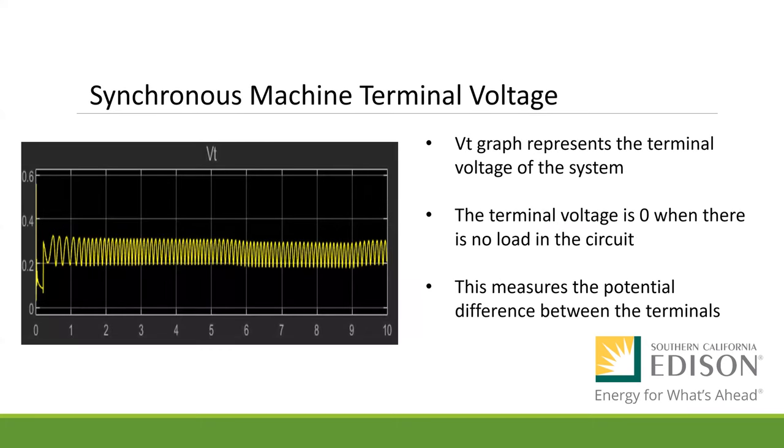Now we have the synchronous machine terminal voltage, which represents the terminal voltage of the system. When we have the microgrid disconnected from the grid, the voltage is zero or very close to zero. This variable measures the potential difference between the terminal of the system, which can help us determine our current and power as needed.